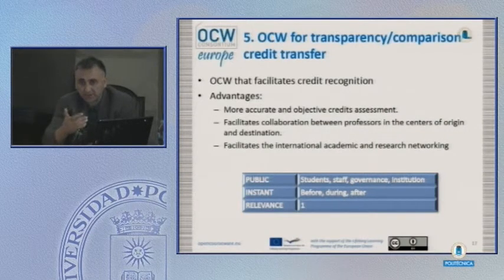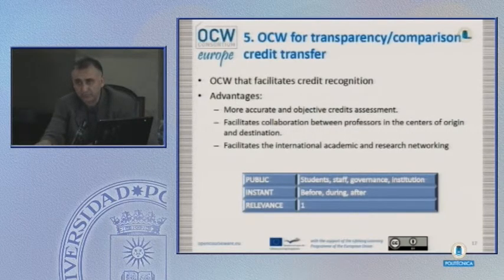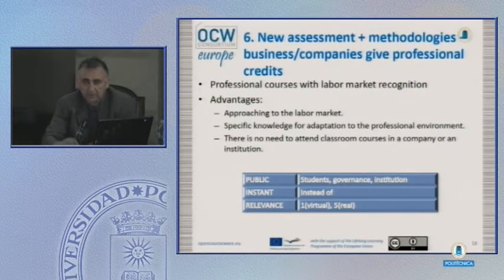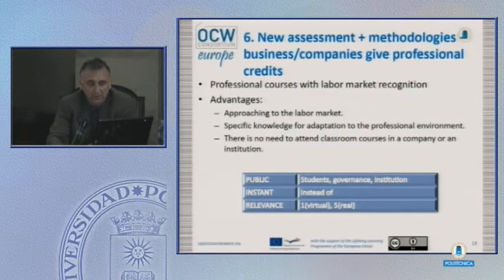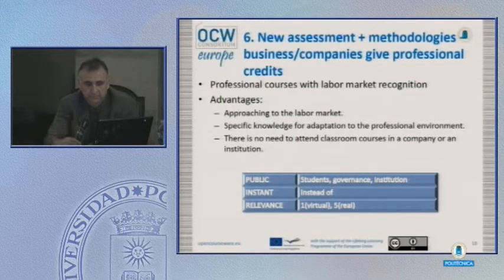The transparency, comparison, and credit transfer scenario is the one referenced earlier. The idea behind it is that institutions must reach an agreement about how to assess credits and the learning process for each student. Another scenario, identified at Online Educa Berlin through a workshop participant's contribution, is the link with the labor market — connecting competencies recognized and most appreciated by the professional world.